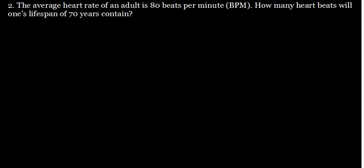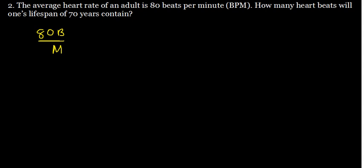The heart beat we've been given is 80 beats per minute. Instead of saying beats per minute, I'm going to write it as 80 beats over minute — it's just the same thing; over and per mean the same thing. Now I want to find how many heart beats total, not per anything, just a number. So I need to do away with the minutes. I'm going to multiply so that I get rid of the minutes, and since we've been given 70 years, I'll first convert minutes to years and then cancel them.